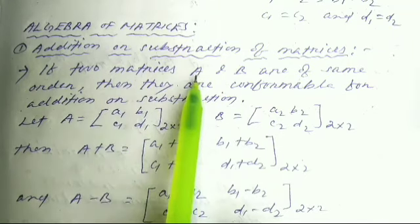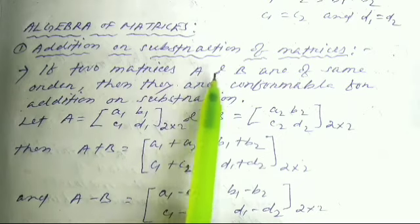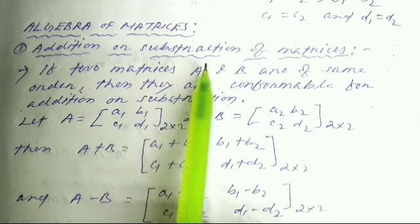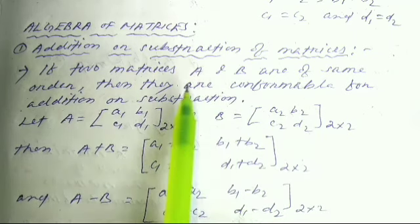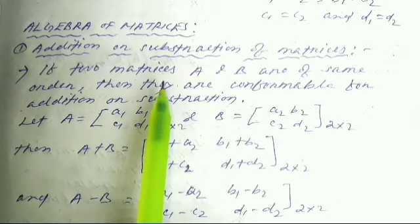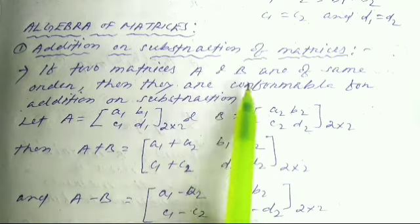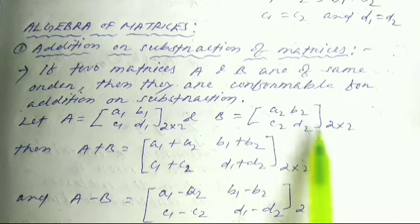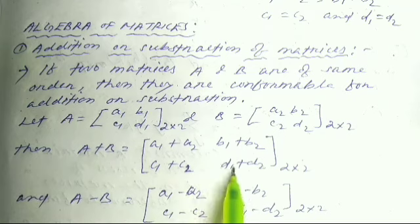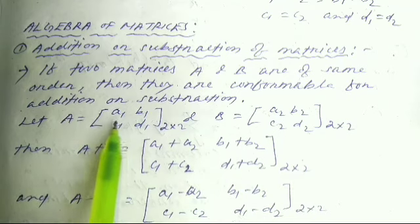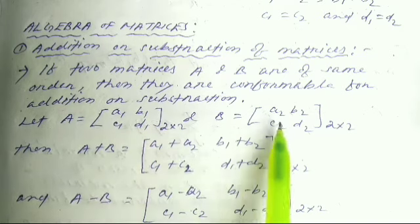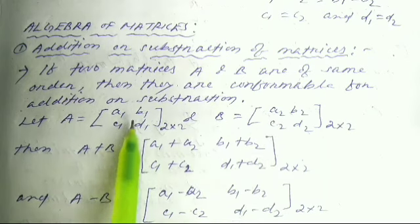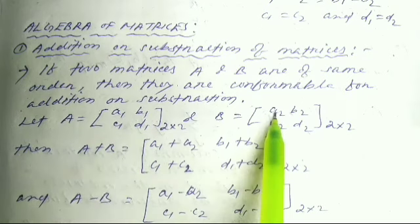For addition or subtraction of matrices, the condition is that the two matrices must be of the same order. For example, a 2×2 can be added to another 2×2, or a 3×3 to another 3×3. Let A = [a1, b1; c1, d1] of order 2×2 and B = [a2, b2; c2, d2] of order 2×2. Then A + B = [a1+a2, b1+b2; c1+c2, d1+d2], which is of order 2×2.